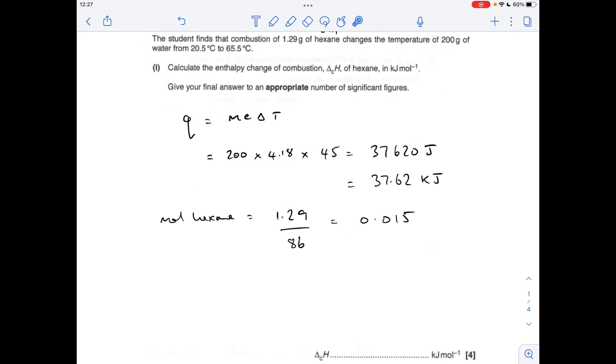Next thing we do is work out the moles of hexane that's been burned, so mass over MR, 0.015. To turn that into an enthalpy change of combustion we put the kilojoules over the moles, comes out as a calculator value of minus, remember it's exothermic, minus 2508 kilojoules per mole. An appropriate number of significant figures will be 3 because all the data is to 3 significant figures, so it's minus 2510 kilojoules per mole.